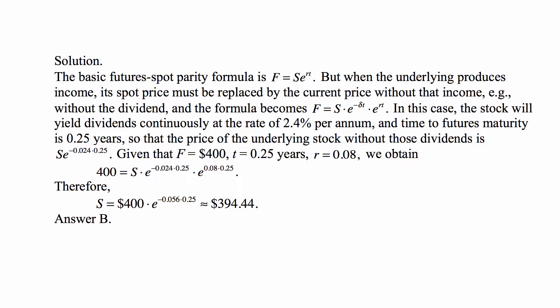In this case the stock yields dividends continuously at the rate of 2.4 percent per annum, and time to futures maturity is 0.25 years, so the price of the underlying stock without those dividends is S times e to the minus 0.024 times 0.25. Given that F is 400, T is 0.25 years, and R is 0.08, we obtain that 400 equals S times e to the minus 0.024 times 0.25, multiplied by e to the 0.08 times 0.25.